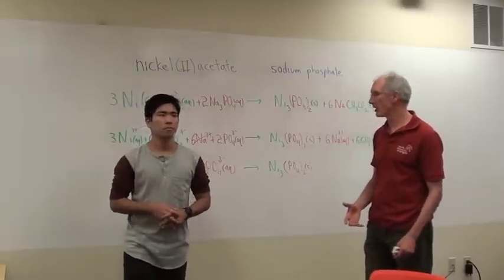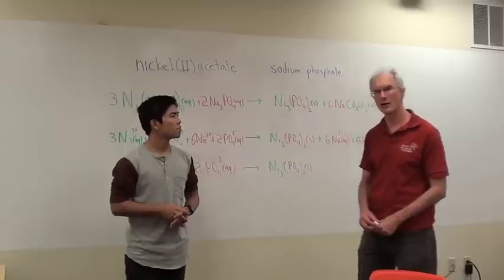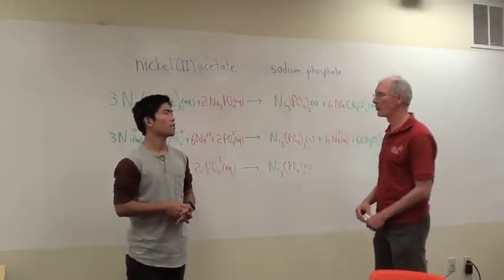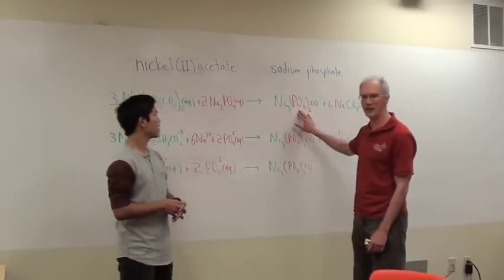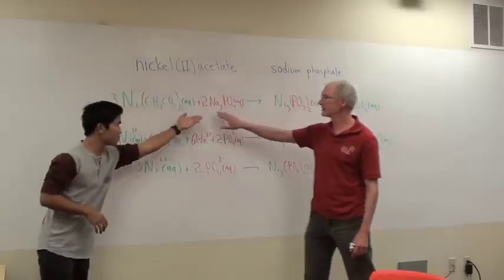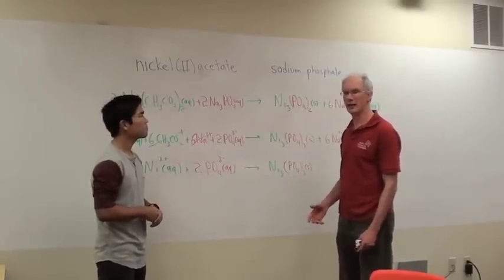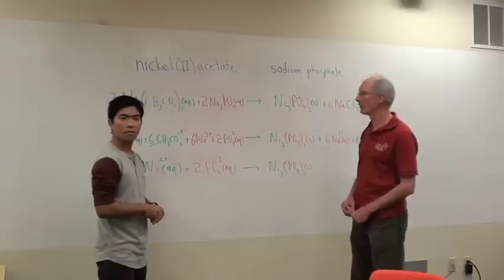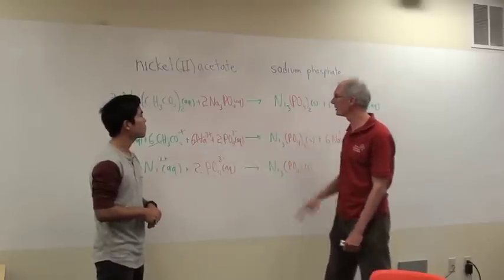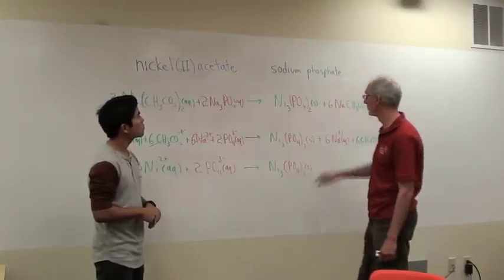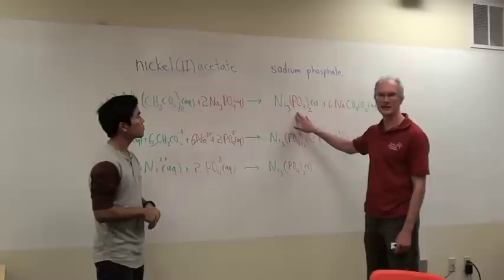Now, of course, the trick to the solubility rules is that there are exceptions. And, for example, one of the exceptions for phosphate being insoluble, i.e. forming solid, is sodium. When sodium is partnered with pretty much anything, it's going to be a soluble compound. So sodium phosphate is soluble because that's one of the exceptions to the phosphate rule. But nickel phosphate is not soluble. It forms a solid or a precipitate.